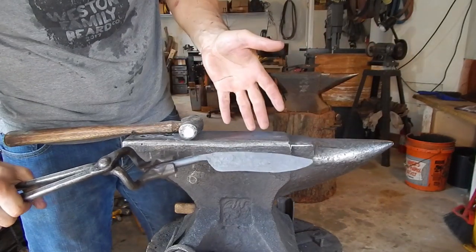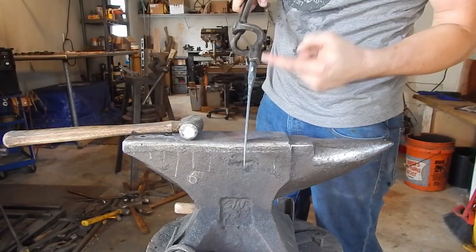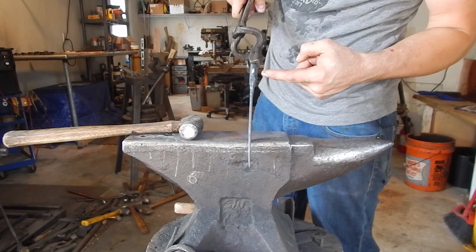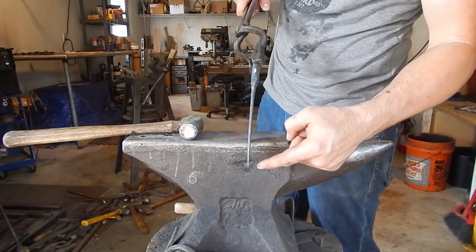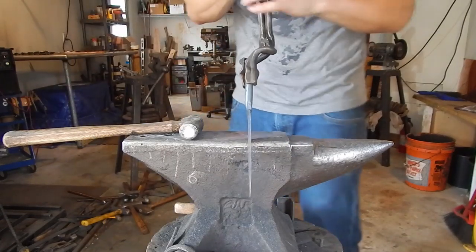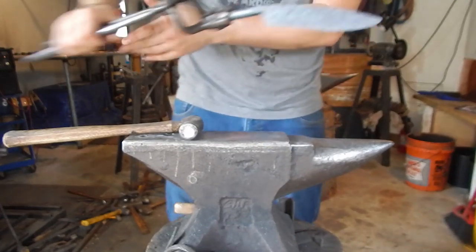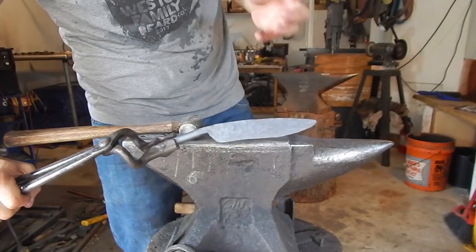So at this point, we've got our blade forged out. We have distal taper running from the hilt all the way down to the tip. We've got the side profile planished. We have a nice thin edge. And we have no bananas.